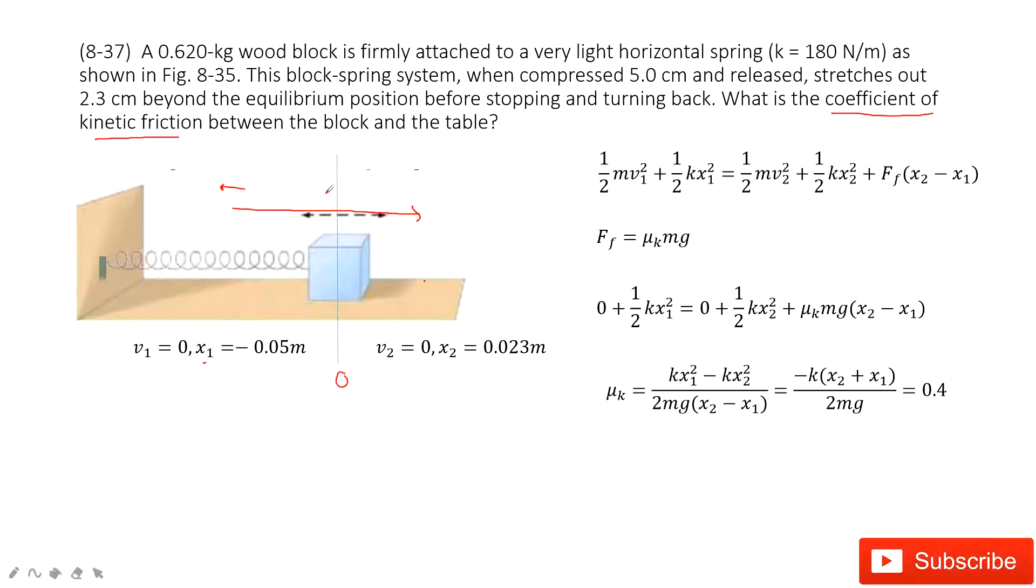And then the energy, this friction work is converted to thermal energy. So in this one, we consider the energy is conserved. The initial kinetic energy plus initial potential energy equals the final kinetic energy plus final potential energy and also the thermal energy when this friction does the work.